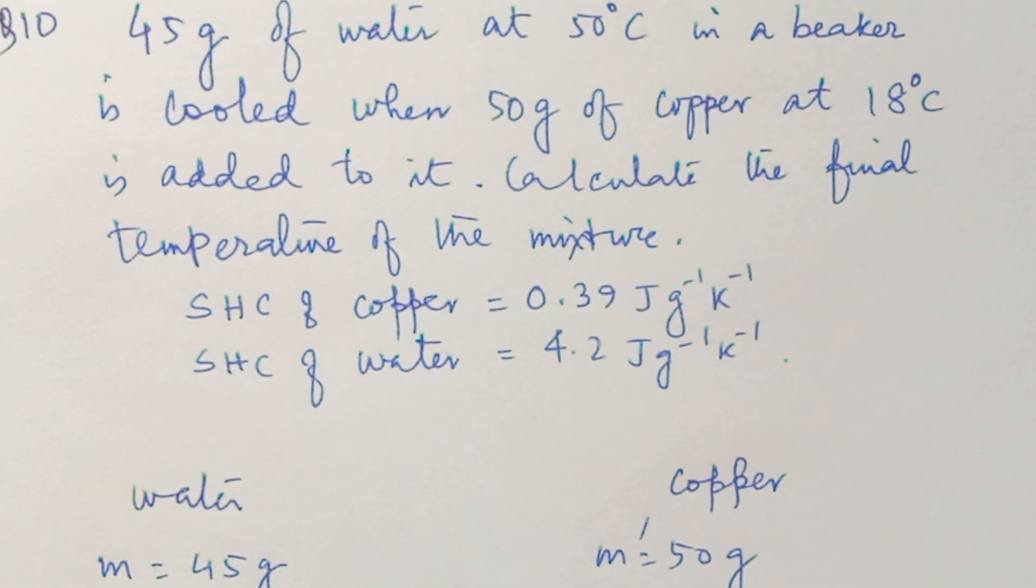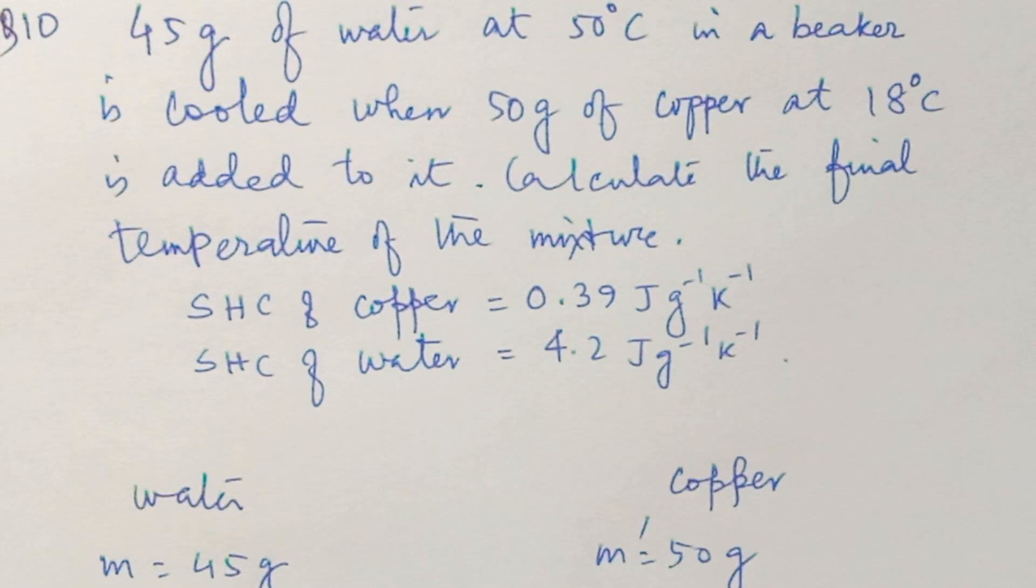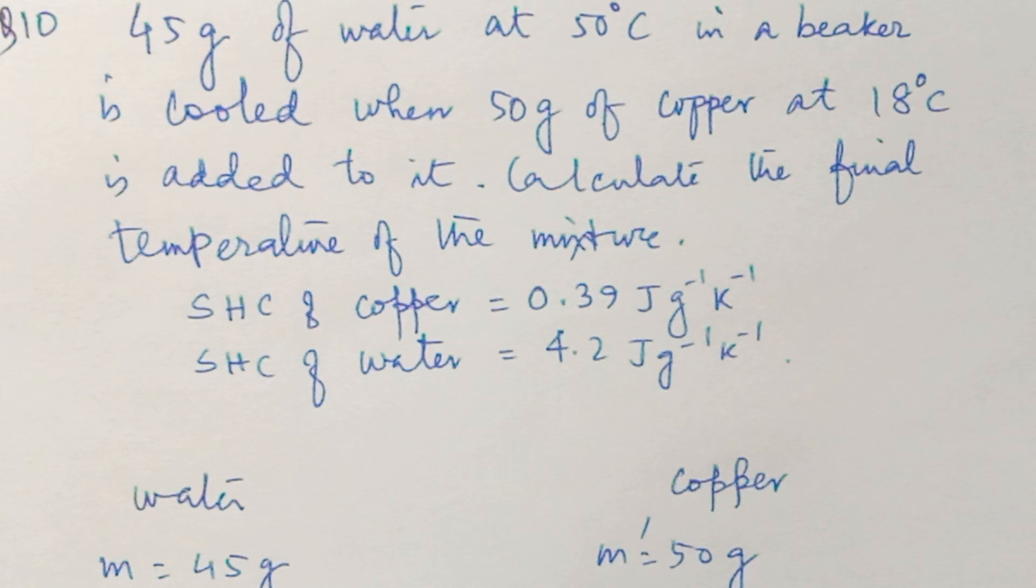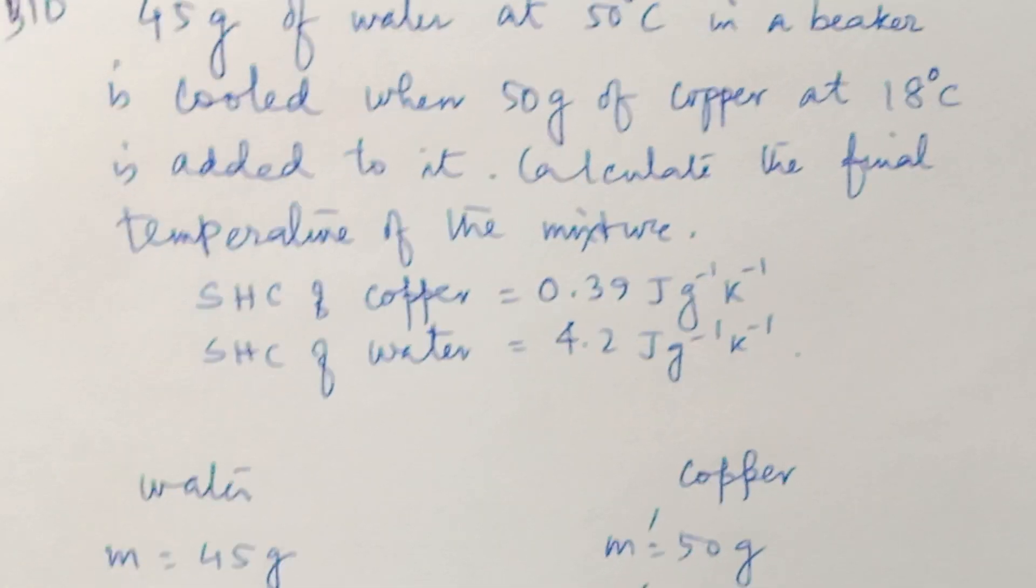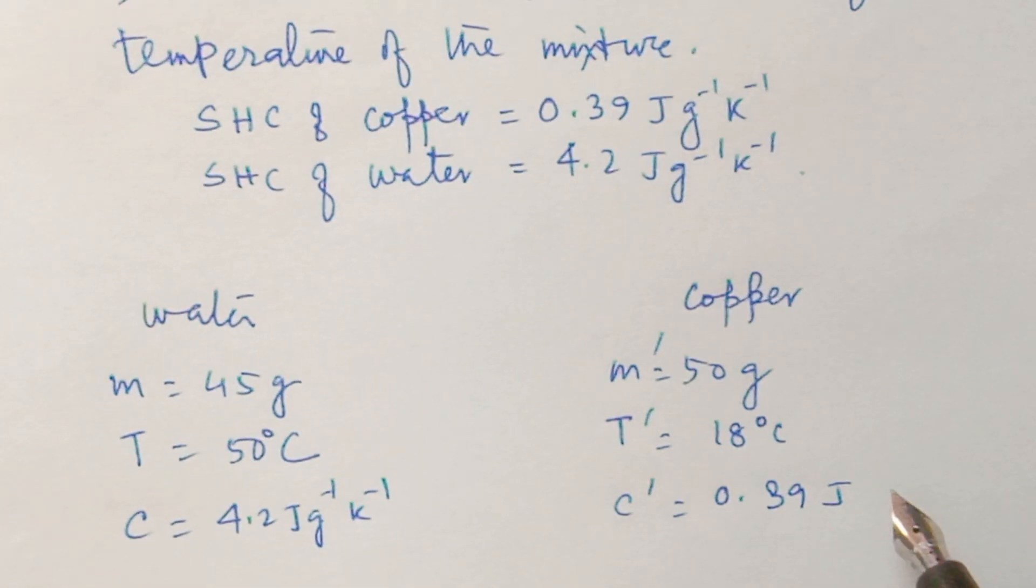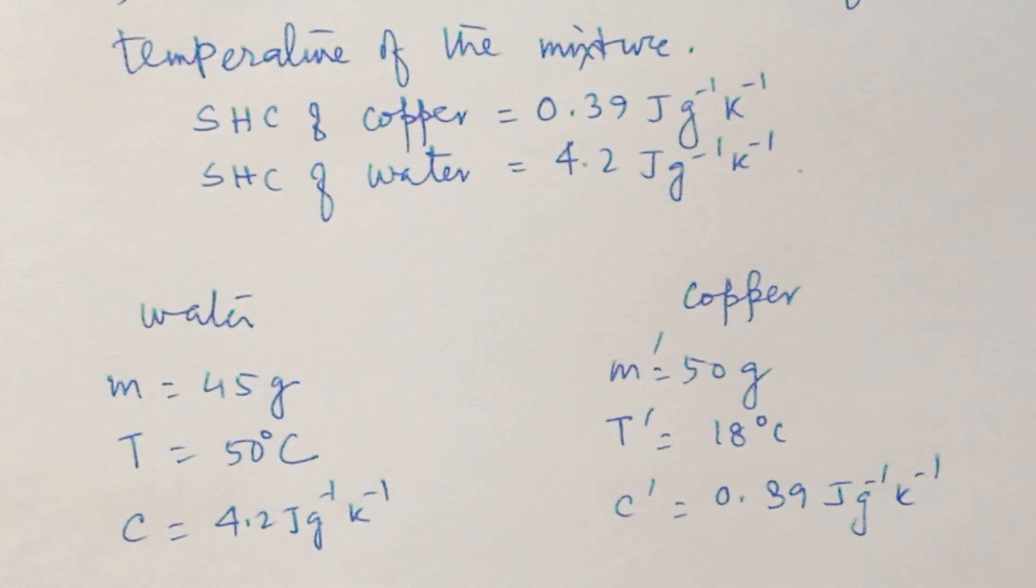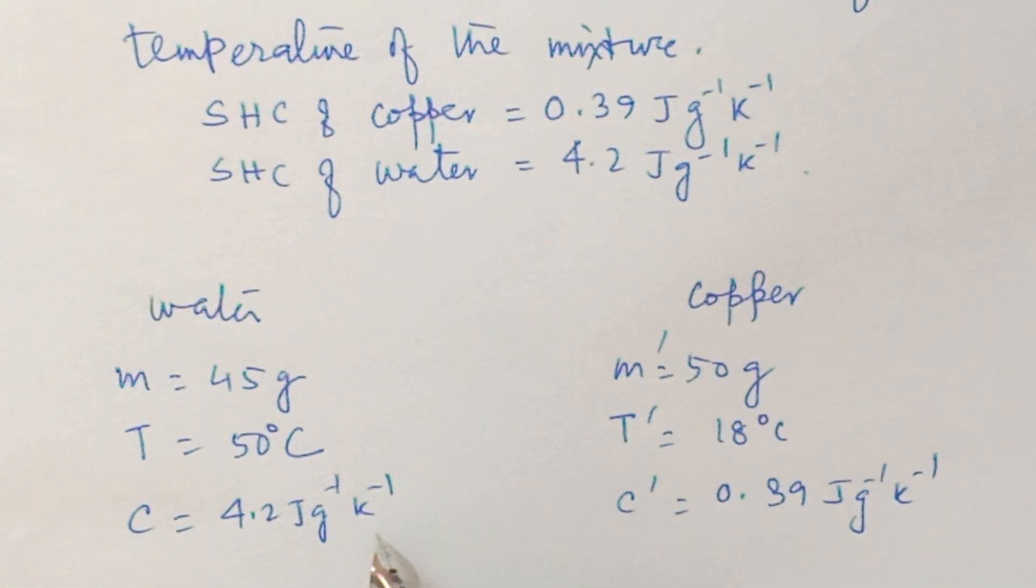We have given the water: 4.2 Joule per gram per Kelvin. And we have given the copper: 0.39 Joule per gram per Kelvin. So, this is the value.